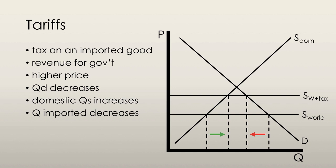The quantity of imports also shrinks from the orange arrow to the blue arrow. The government revenue can be calculated as the purple rectangle highlighted on the graph. It represents the total tax revenue that the government will earn.